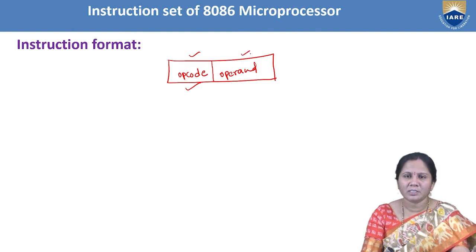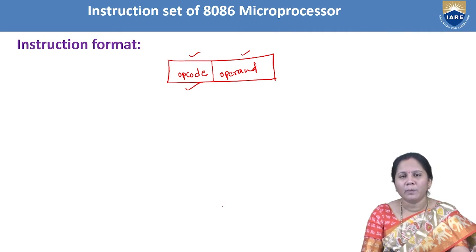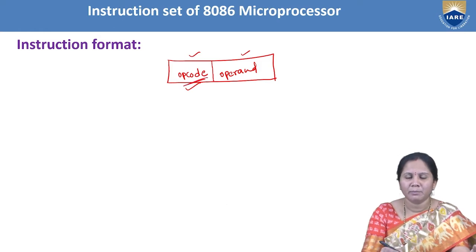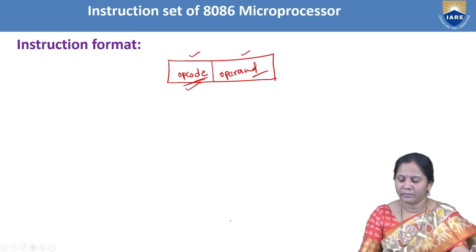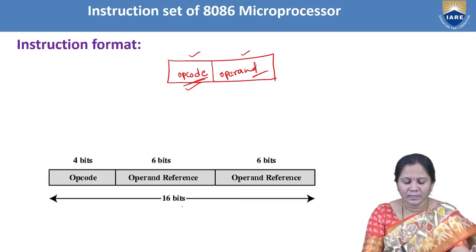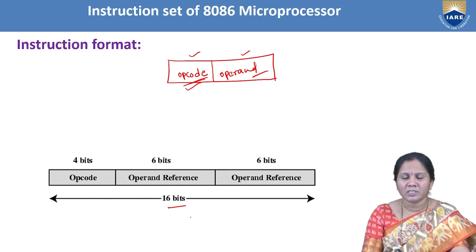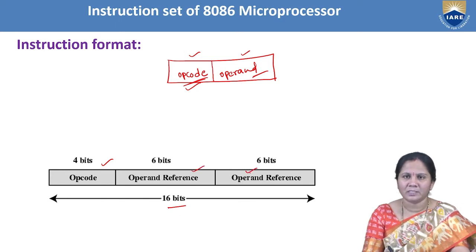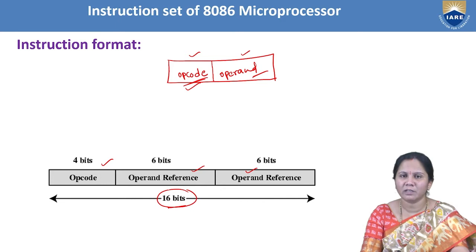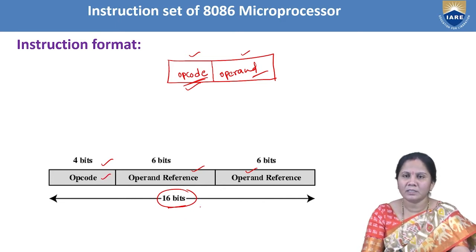The second part of the instruction is the operand, which says on which variables the operation should be performed. The operand includes data, registers, memory locations, etc. This is a 16-bit instruction format, divided into two parts: the opcode part and the operand part. In a 16-bit register, only 4 bits will come under the opcode part, and the remaining bits will be related to the operand part.